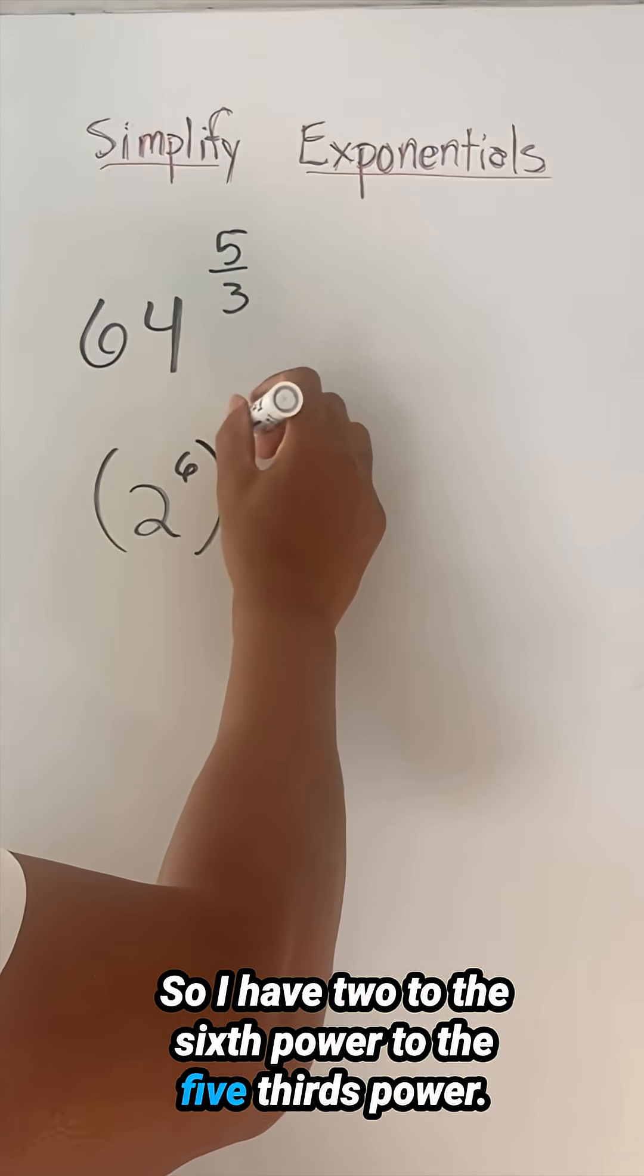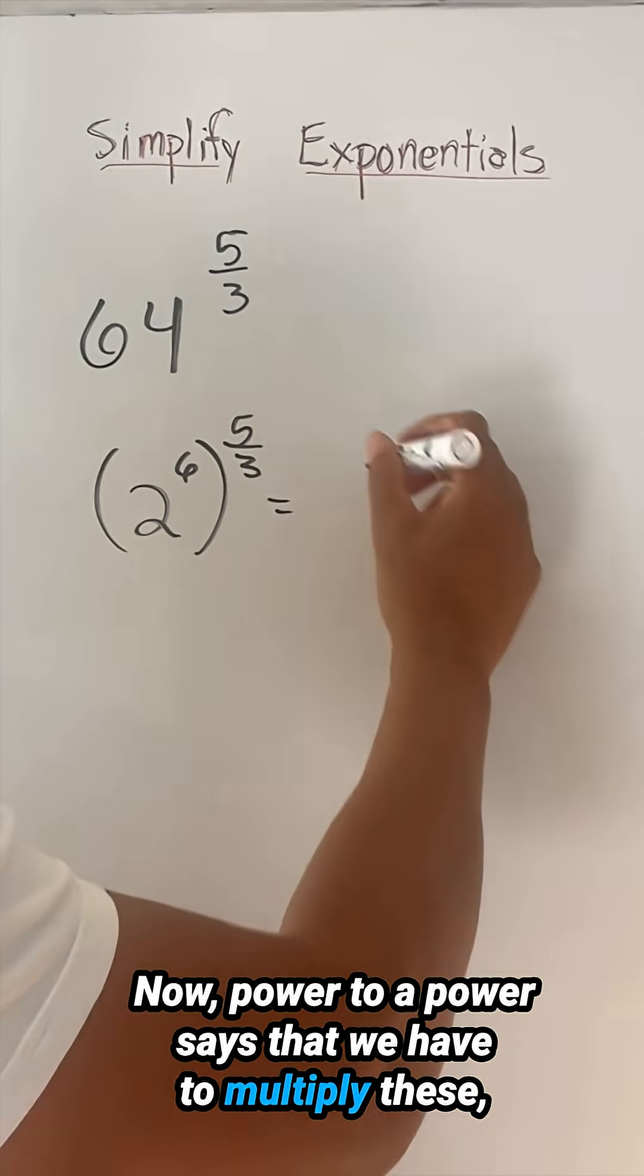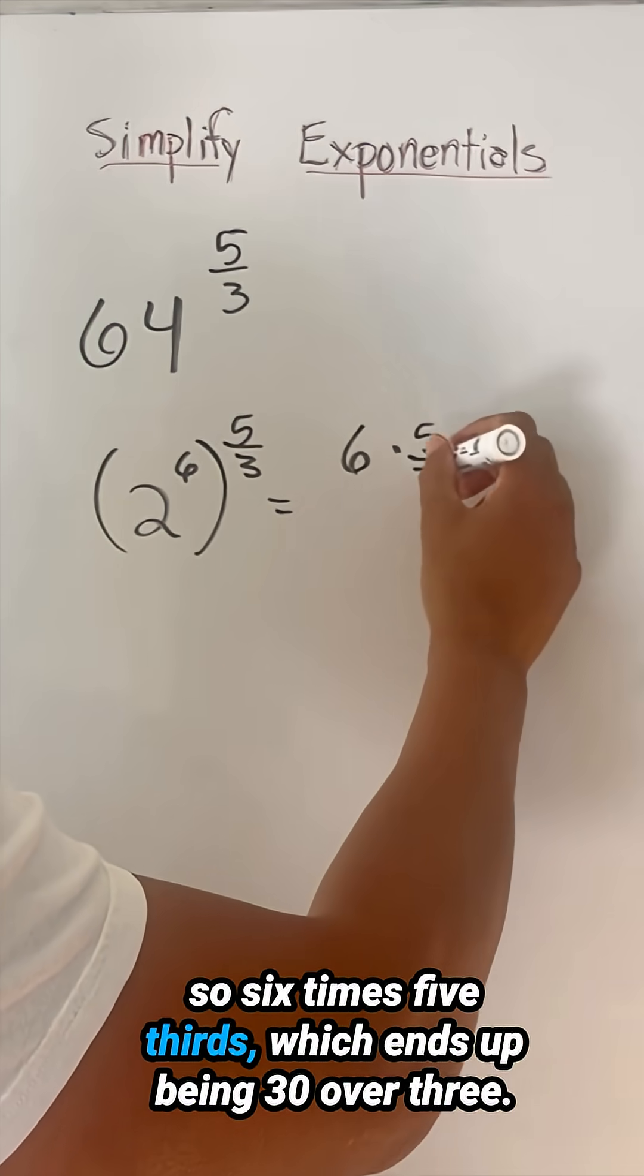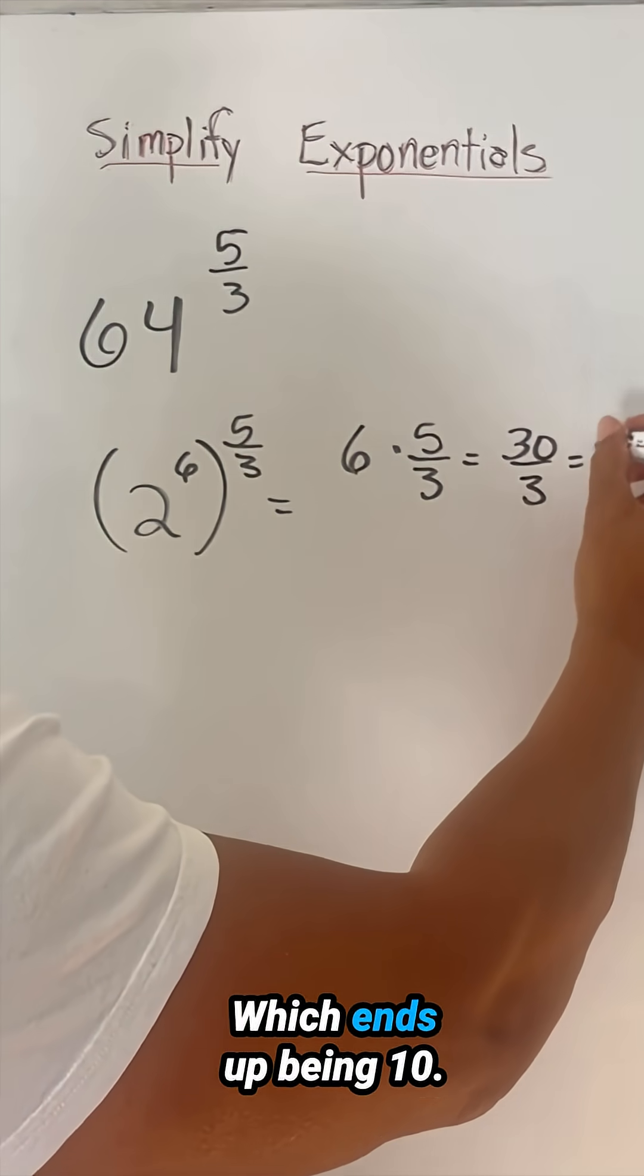So that's two to the sixth power to the five thirds power. Now power to a power says that we have to multiply these. So six times five thirds, which ends up being 30 over three, which ends up being 10.